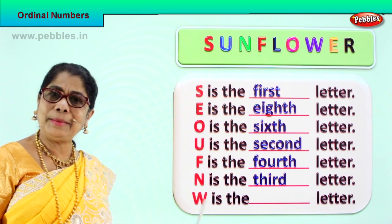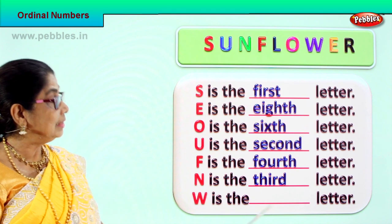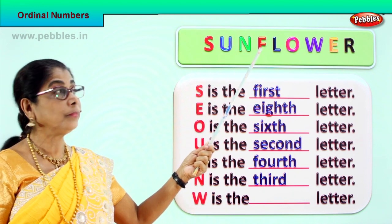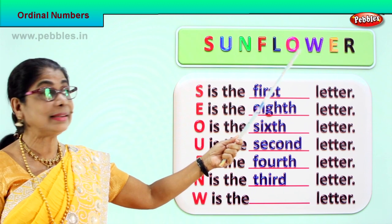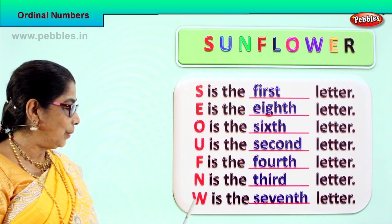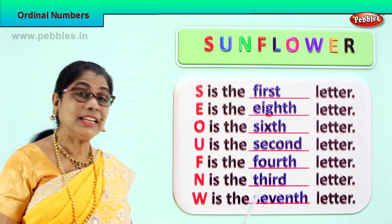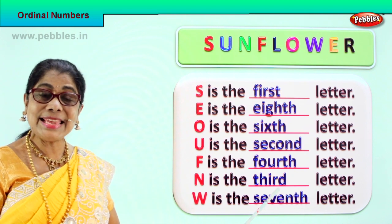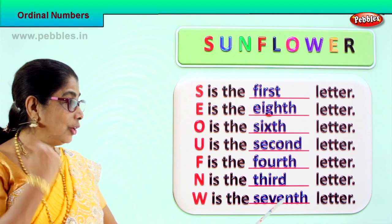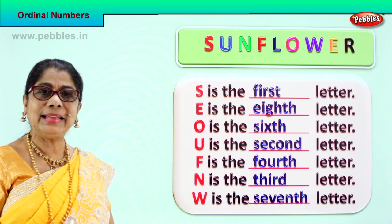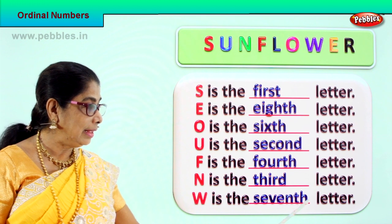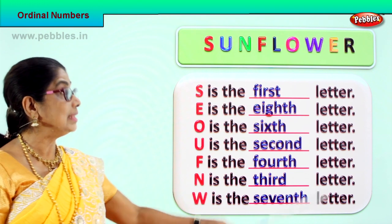Now we have a last letter here — W. Let's look at the position of W: first, second, third, fourth, fifth, sixth, seventh. W is in the seventh position. So W is the seventh letter. Spell seventh: S-E-V-E-N-T-H. You add on TH. Repeat seventh for me: S-E-V-E-N-T-H. W is the seventh letter.